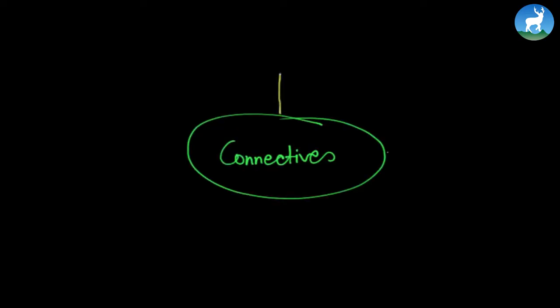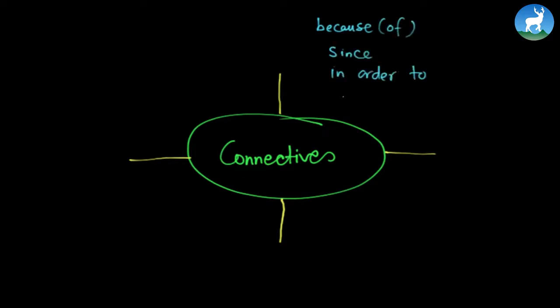Now let us start by looking at what conjunctions or connectives are. Connectives are those little parts of sentences that connect two different sentences, or sometimes even a single sentence, in different ways. Let's look at the first group of conjunctions: 'because' or 'because of', 'since', 'in order to', and 'so that'. These conjunctions have a combined or specific name, and that name is called reason and purpose conjunctions or connectives.